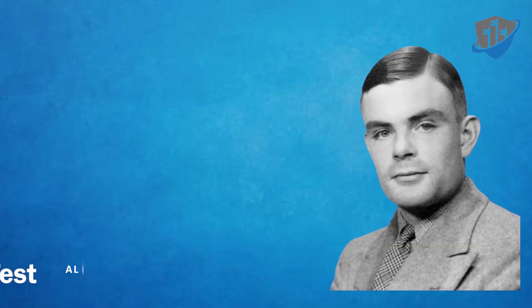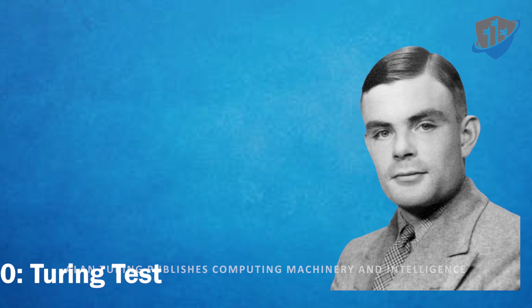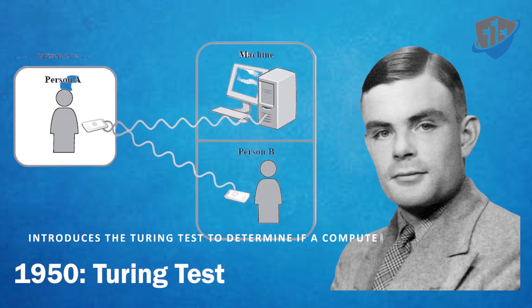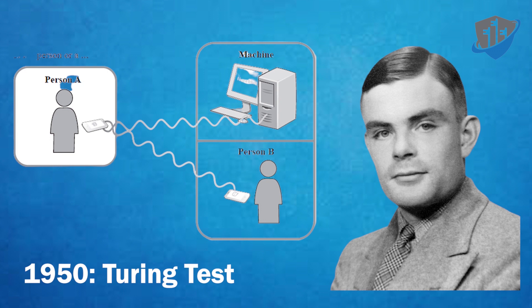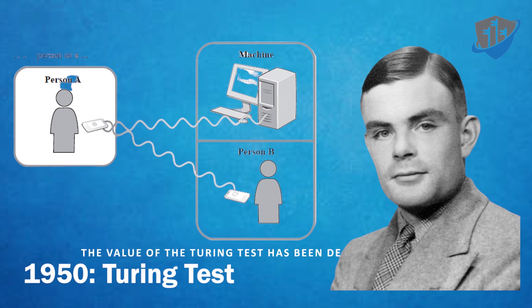1950: Alan Turing publishes 'Computing Machinery and Intelligence,' introducing the Turing test to determine if a computer can demonstrate the same intelligence or produce the same results as a human. The value of the Turing test has been debated ever since.